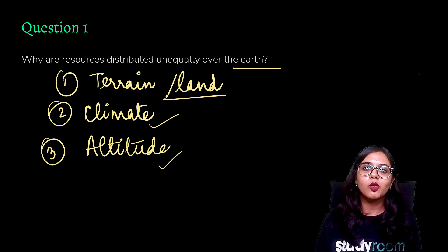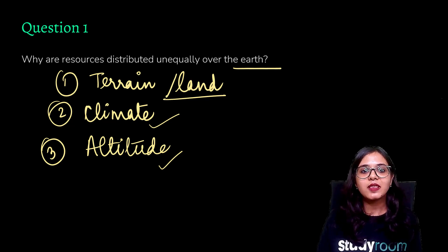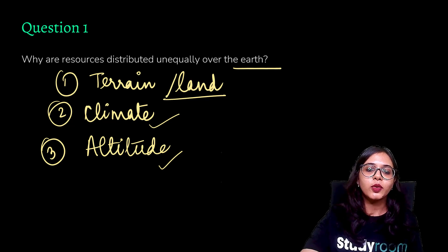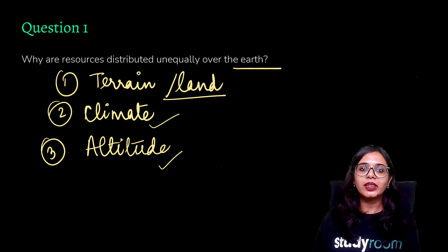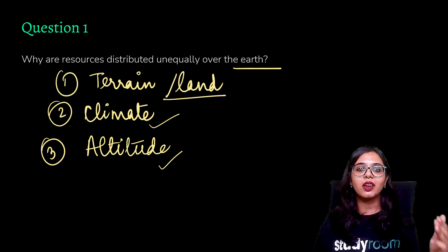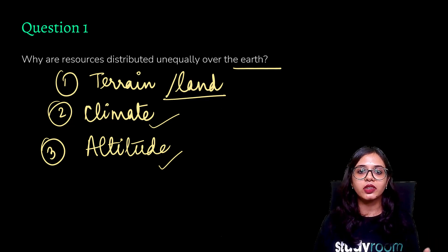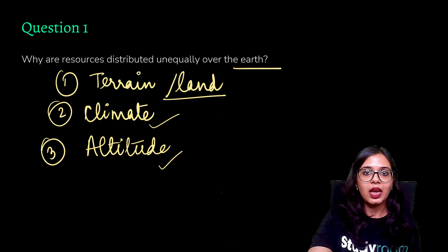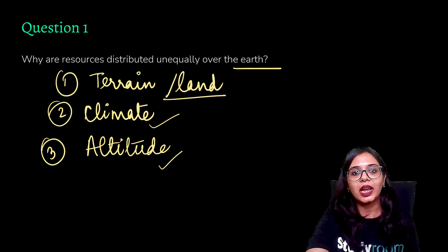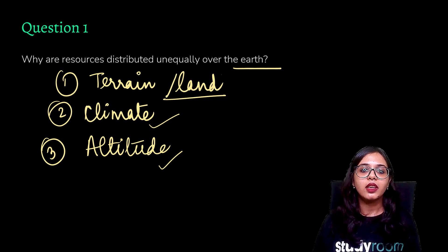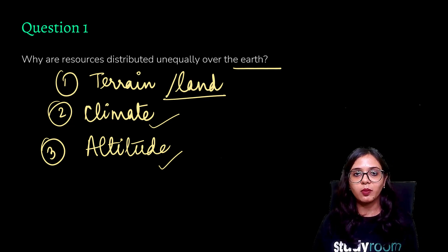For example, coconuts can be available in coastal areas, but they may not be available in other areas like the Sundarbans. When you are thinking about resources, you have to take all three factors into mind: the kind of terrain, the climate in that particular area, and the altitude — whether high or low.